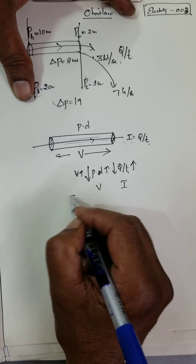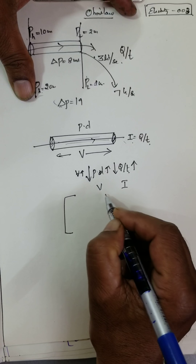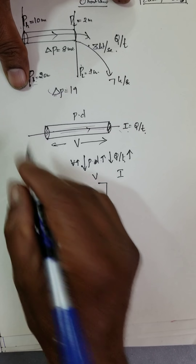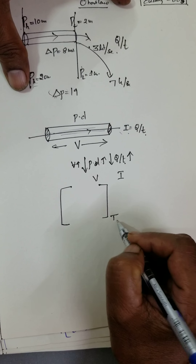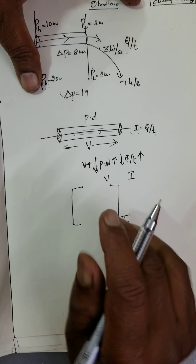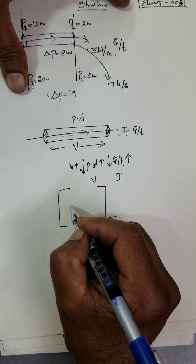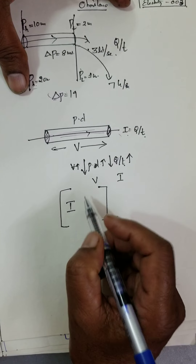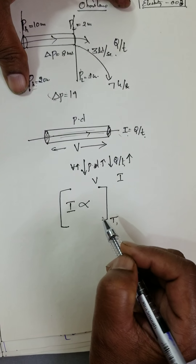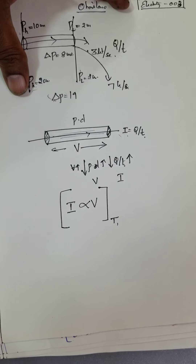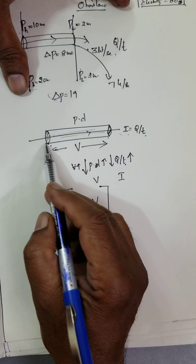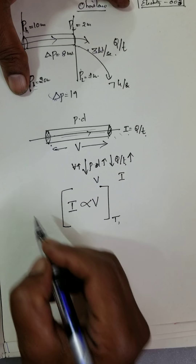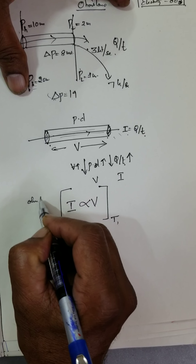Under standard conditions at constant temperature, steady current flowing through the conductor is directly proportional to the potential difference between the ends of the conductor. This is the statement of Ohm's Law.